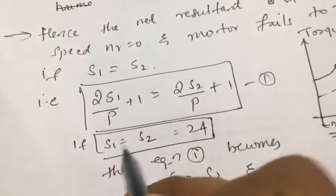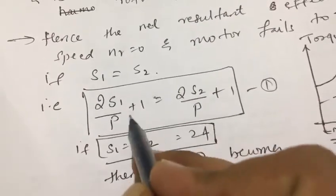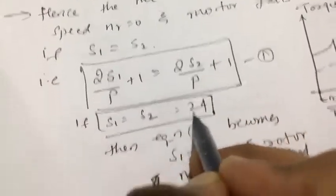So if they are equal, then if you simplify, it will be as good as s1 equals s2, that is equal to 24. If this condition is satisfied, then speed nr will be zero.